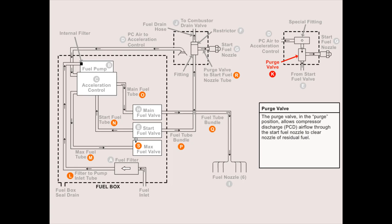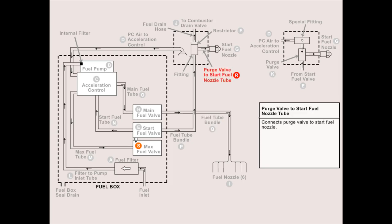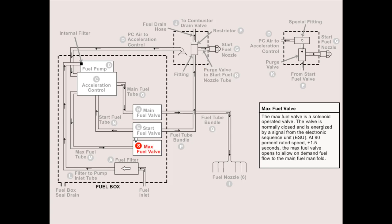The purge valve, in the purge position, allows compressor discharge PCD airflow through the start fuel nozzle to clear the nozzle of residual fuel. The filter to pump inlet tube connects the fuel filter to the fuel pump inlet. The max fuel tube connects the acceleration control to the max fuel valve. The main fuel tube connects acceleration control to the main fuel valve. The fuel tube bundle connects the main fuel valve assembly to main manifold fuel nozzles. The purge valve to start fuel nozzle tube connects the purge valve to the start fuel nozzle. The max fuel valve is a solenoid operated valve, normally closed and energized by a signal from the ESU. At 90% rated speed plus 1.5 seconds, the max fuel valve opens to allow on demand fuel flow to the main fuel manifold.